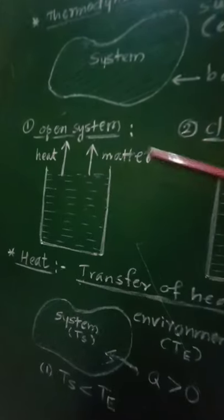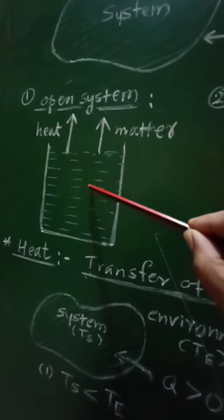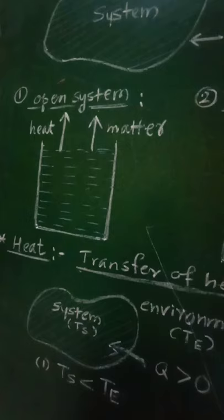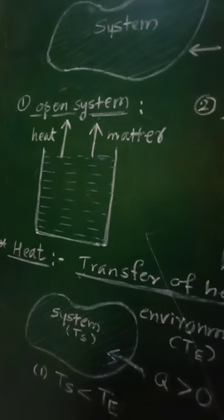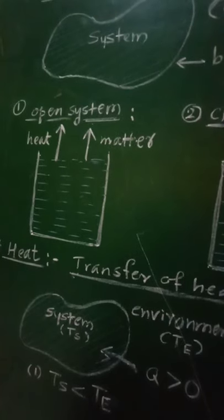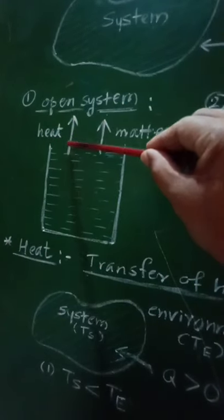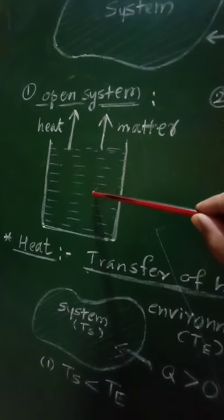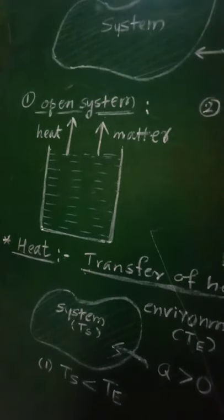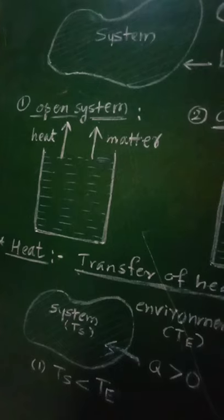Let us consider the first type: the open system. In this case, water represents the system, and both heat as well as matter will be exchanged with the atmosphere. An open system is a system that freely allows exchange of energy and matter with its environment. From the figure, the two arrows represent heat and matter.